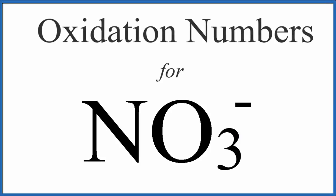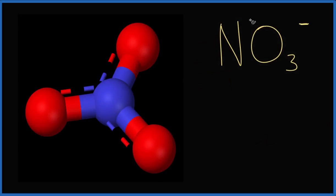For NO3 minus, the nitrate ion, the overall oxidation number is minus one. That's for the whole molecule. But let's look at each of the individual elements in NO3 minus, the nitrate ion.